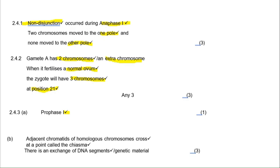For part B, describing crossing over: adjacent chromatids of homologous chromosomes cross over at a point called the chiasma, and there is an exchange of DNA segments or genetic material. That gives you three marks. A critical note: when answering any meiosis question, always use the term 'homologous chromosomes.' Never just write 'chromosomes' — if you omit 'homologous,' you lose that mark. Always write homologous chromosomes regardless of what the question asks.